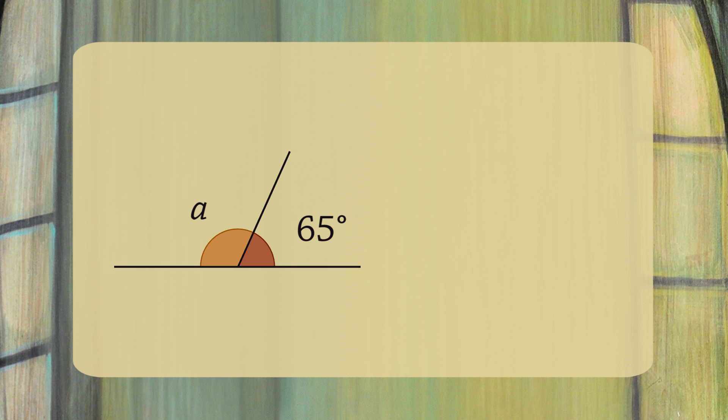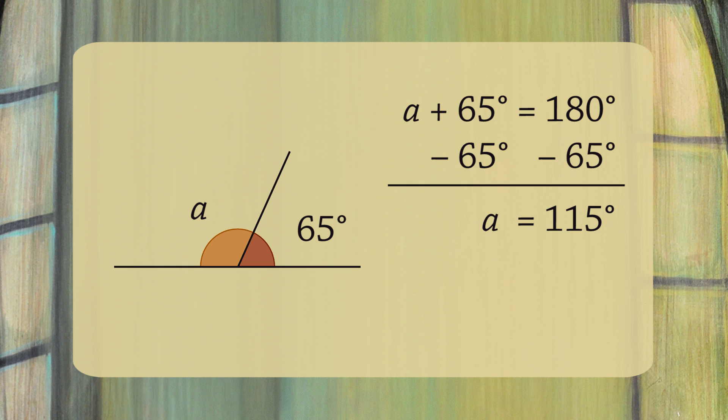Let's see an example. What is the size of the angle A? These two angles are supplementary, so A plus 65 degrees equals 180 degrees. If you subtract 65 from both sides, you get A equals 115 degrees.